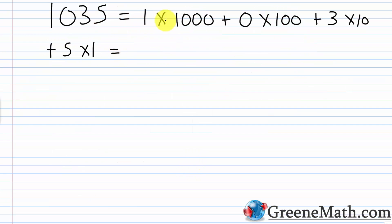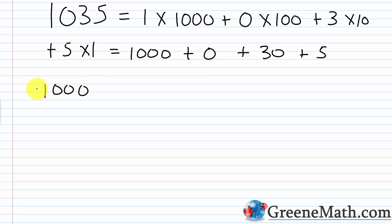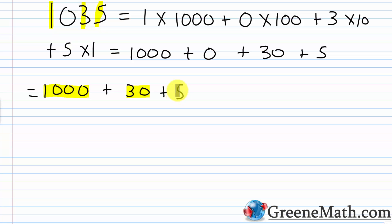Let's do a little multiplication. 1 times 1,000 is 1,000. Plus 0 times 100 is 0. Plus 3 times 10 is 30. And then plus 5 times 1, that's 5. So let's write this as 1,000 plus 30 plus 5 — we don't need to include that 0. When we write a number in expanded notation, you can see it emphasizes the place value of each digit. This 1 has a value of 1,000. This 3 has a value of 30. This 5 is still a 5 because it's in the 1s place — 5 times 1 is just 5. The reason this is 30 is because it's in the 10s place: 3 times 10 is 30.